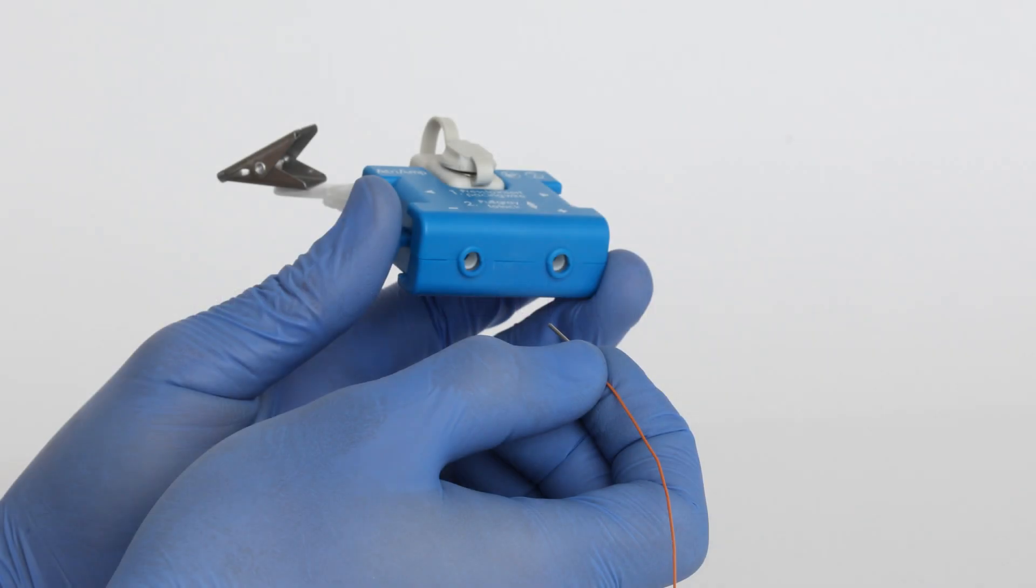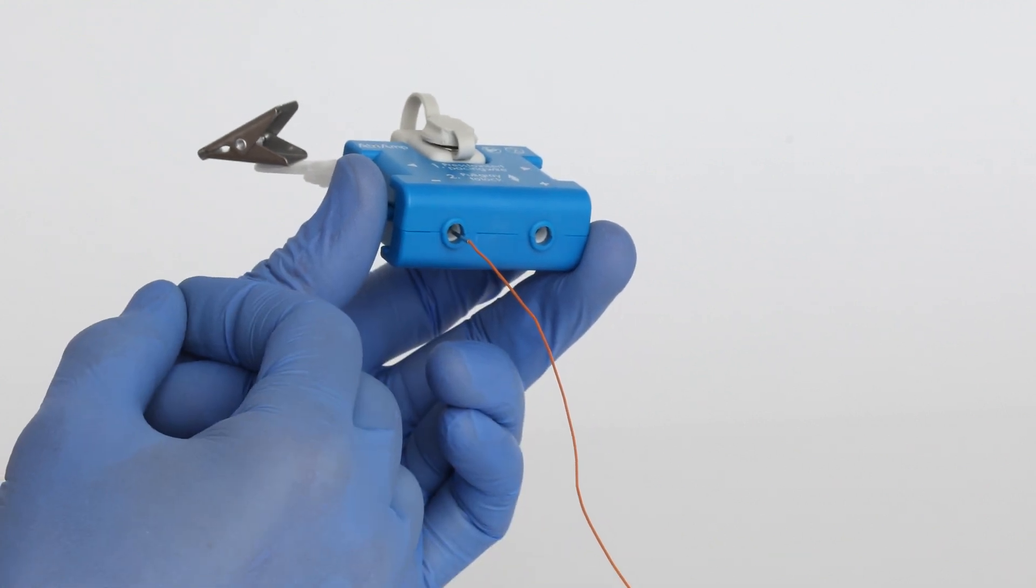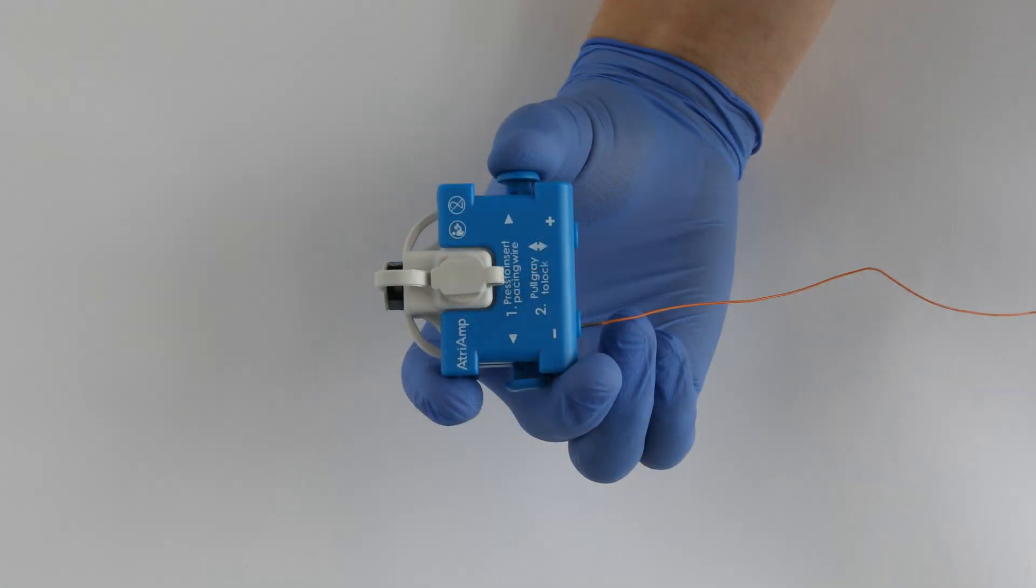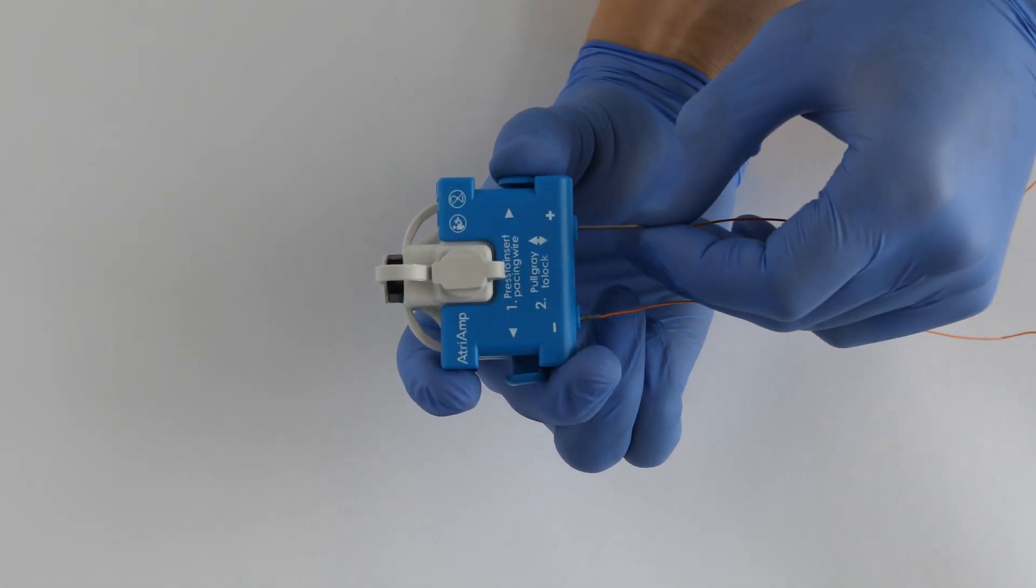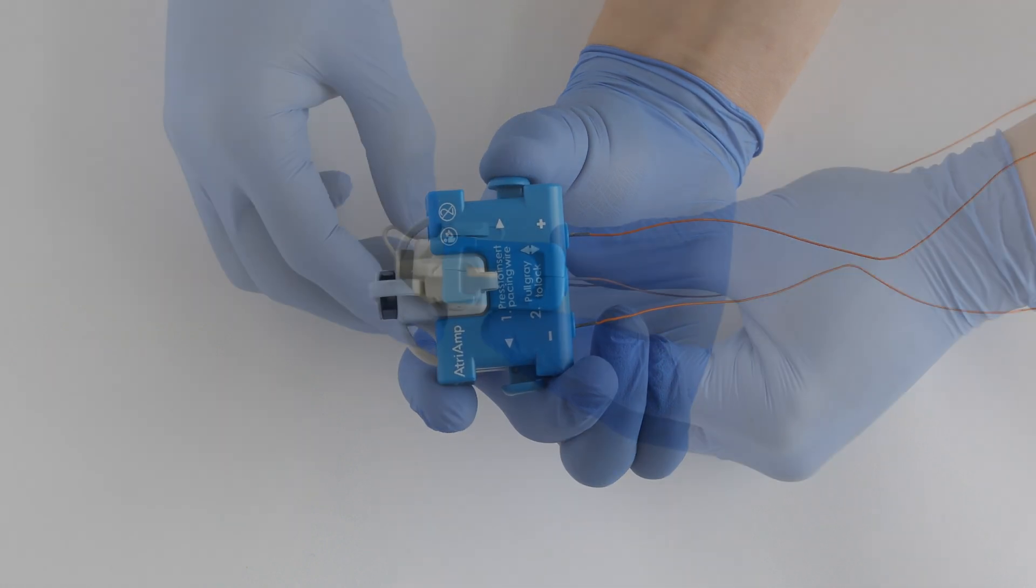Connect an atrial epicardial wire to the negative port on the AtriAmp by inserting a pacing wire into the appropriate negative port while pressing the corresponding side button. Release the button to secure the lead. Next, insert the second atrial epicardial wire, or the skin lead, into the positive port on the AtriAmp through the same method on the positive side.